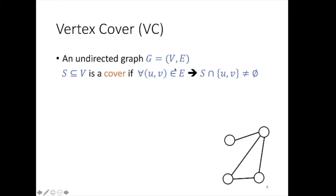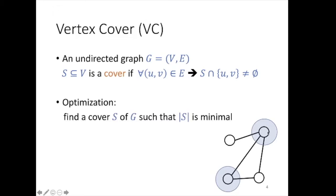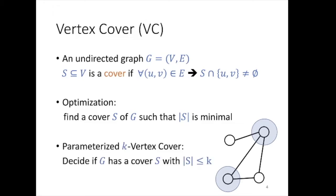Given an undirected graph G, we say that a subset S of vertices is a vertex cover if for any edge uv in the graph, the intersection of S with {u, v} is non-empty. For example, we have this small graph here and those two vertices are a vertex cover. It can be cast as an optimization problem in which we want to find a vertex cover S with a minimal number of vertices, or as a decision problem in which we want to decide whether a graph G has a cover with k or fewer vertices.